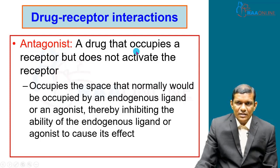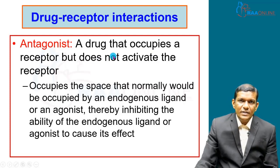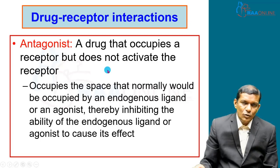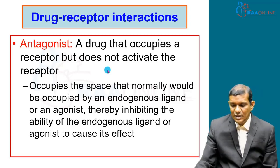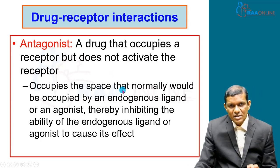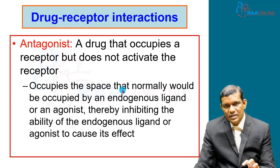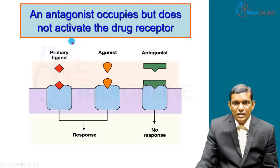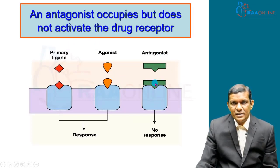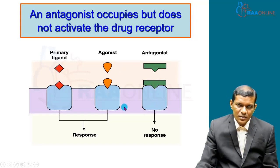An antagonist is a drug that occupies a receptor but does not activate it. Going back to the key-lock analogy: the key fits into the lock but when you try to open it, it does not open. The antagonist just occupies the space or blocks it so that it will not allow the agonist molecule to produce its effect. It simply binds to the receptor, occupies the space, and does not allow the agonist to come and bind to produce therapeutic effects.